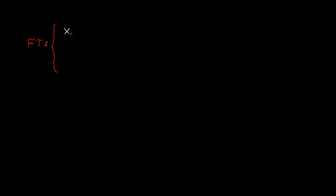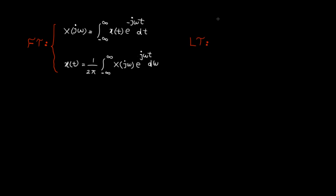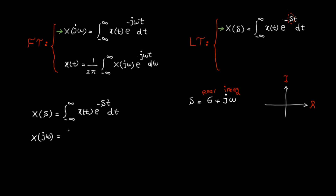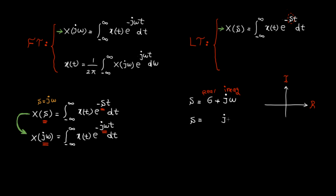From the previous chapter, here's the definition of Fourier transform, and this one is the inverse Fourier transform. Now let's start with Laplace transform. Here's the beautiful equation of Laplace transform. S here is a complex variable — let's write it as σ + jω, where σ is the real part and jω is the imaginary part. This is the Cartesian representation of the complex number. Comparing Fourier and Laplace transforms, here we have s and here we have jω — this means when s equals jω, Laplace transform becomes Fourier transform.